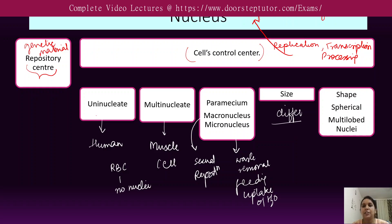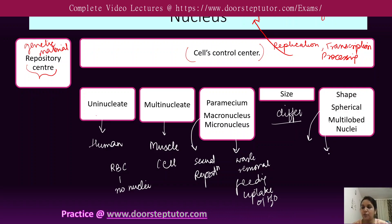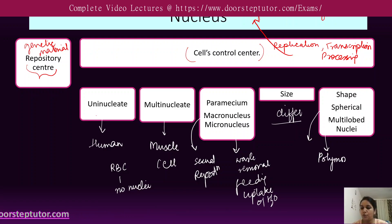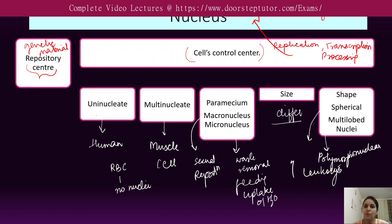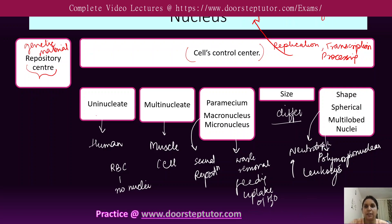The size of the nucleus may differ depending on which cell it is present in, and the shape can also differ. Most nuclei are spherical, but sometimes multi-lobed nuclei can also be present — for example, in polymorphonuclear leukocytes, which are basically a type of neutrophil that contains multi-lobed nuclei.